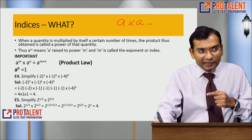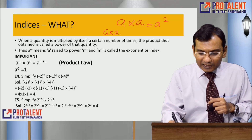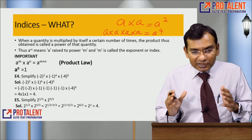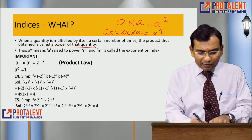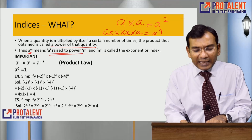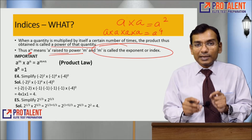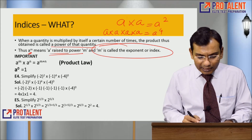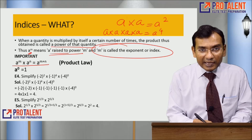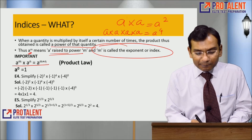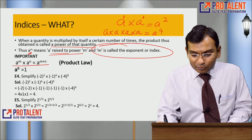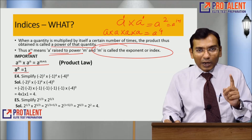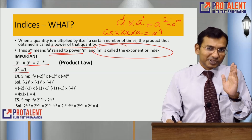It is also called A raised to the power M, where M is called the exponent or index. Now there are some laws of indices. The first law says: A to the power M multiplied by A to the power N equals A to the power M plus N. For example, A to the power 1 multiplied by A to the power 1 is A to the power 2. Also, A to the power 0 is equal to 1. Let's simplify: minus 2 to the power 2, minus 1 to the power 4, minus 4 to the power 0. Any negative number raised to an even power becomes positive, so minus 2 squared is positive 4. Minus 1 to the power 4 is also 1. Any number to the power 0 is 1. So the answer is 4.